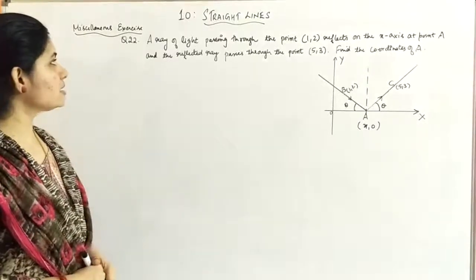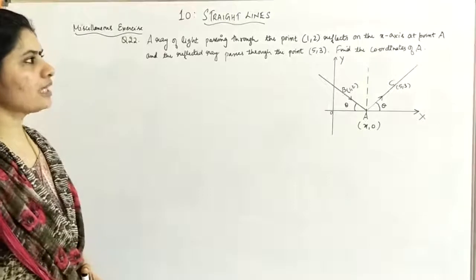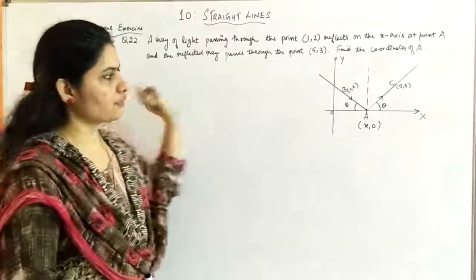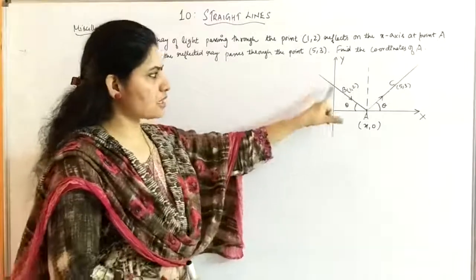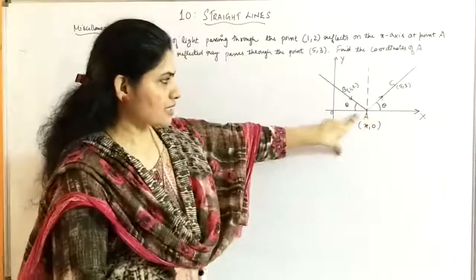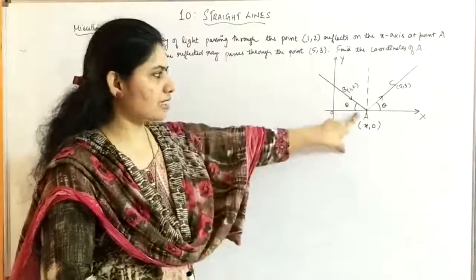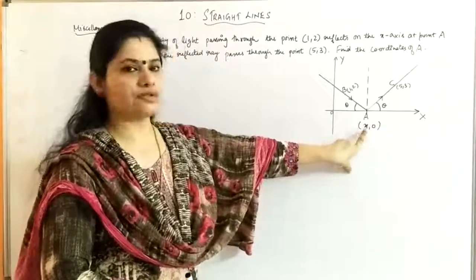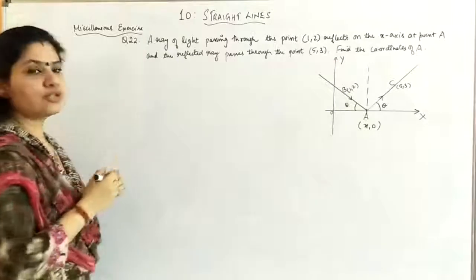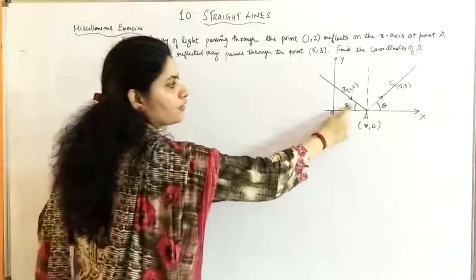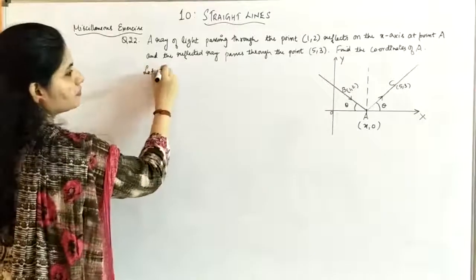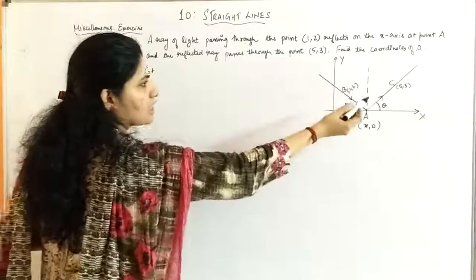Question 22: a ray of light passing through point (1, 2) reflects on the x-axis at point A, and the reflected ray passes through point (5, 3). Find the coordinates of A. A figure shows the incident ray and the reflected ray. The point where it touches the x-axis is A, with coordinates (x, 0). The angle of incidence equals the angle of reflection — that concept is used here to find the slope.